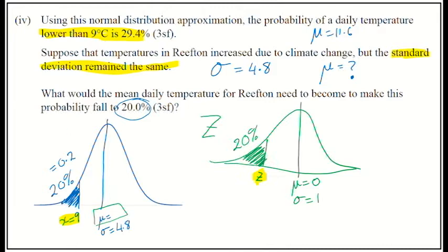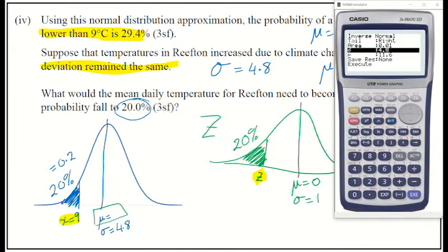So, we are going to go to our calculator and I'm going to go into my inverse normal mode. And what I need to do now is the tail that I've got there is on the left hand side. So, I'm going to do f1 to do a left tail. The area on the left is 0.2 or 20 percent. And I'm going to put in a standard deviation of 1 with a mean of 0. So, I'm putting in my z distribution.